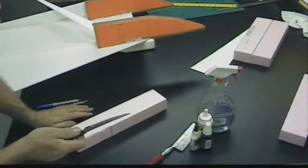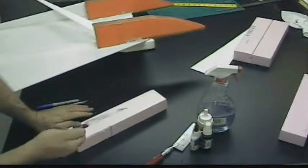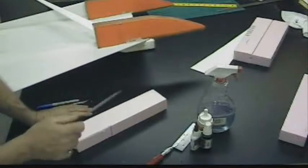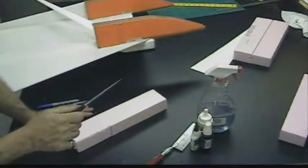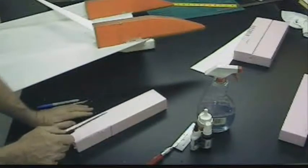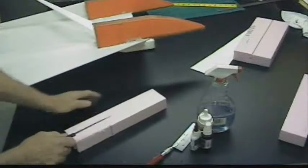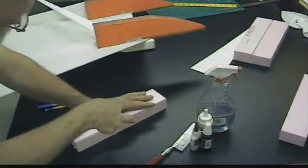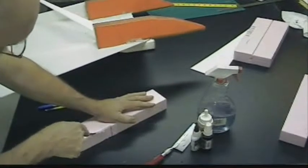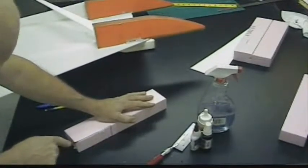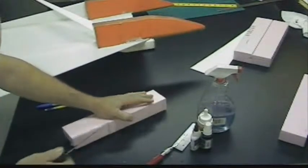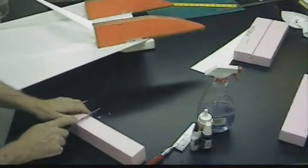The other alternative is a serrated blade, a steak knife. This is a nice thin steak knife that works really well with foam. So I know I can get in here. See it pop. And make that cut.